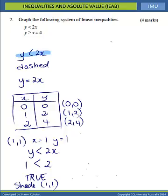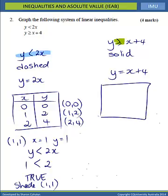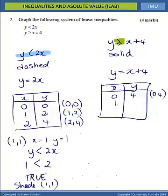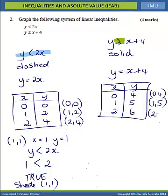Looking at the second inequality, y is greater than or equal to x plus 4. Noting we have greater than or equal to, we will have a solid line. Finding points for y equals x plus 4: when x equals 0, y equals 4, giving point 0, 4; when x equals 1, y equals 5, giving point 1, 5; and when x equals 2, y equals 6, giving point 2, 6.